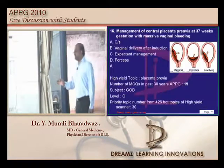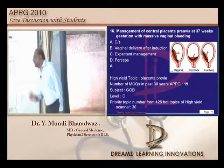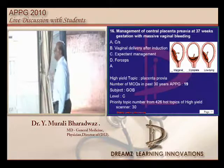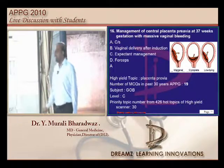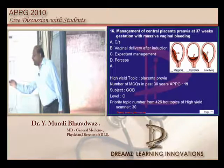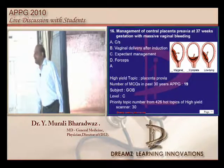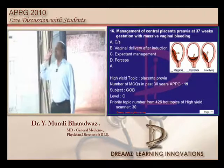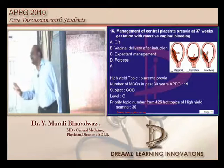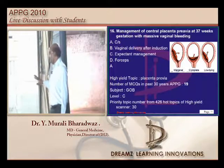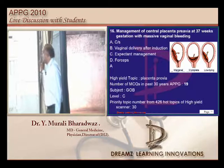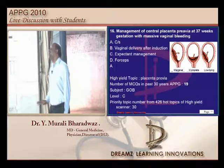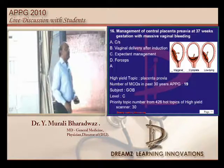If there is a central placenta previa with hemorrhage, what do you do? Elective caesarean section is the only option. Is there any type of placenta previa where you can still go for a trial of labor? Type 2 anterior — you can try trial labor there. But in central placenta previa there is no role for trial labor; you have to go ahead with caesarean section, especially when there is hemorrhage.